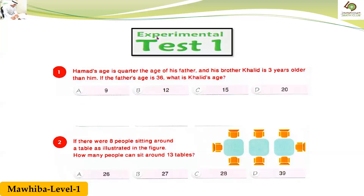Sarah, what will I do here? Can you help me find the answer? Hamad's age is a quarter the age of his father. What's the meaning of quarter? If asked about a quarter, you divide it by four. Division is the opposite operation of multiplication — the same as multiplication, but opposite.